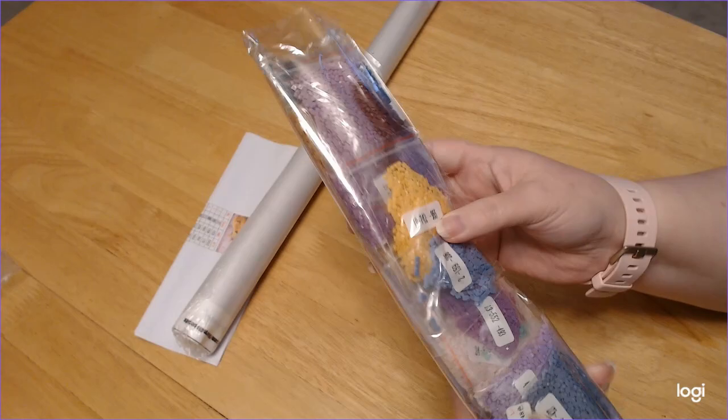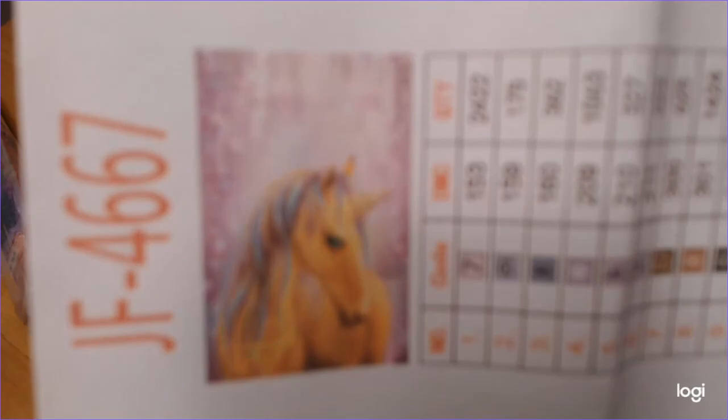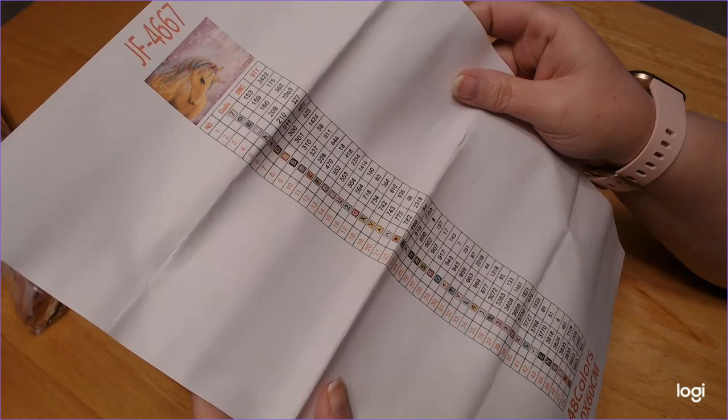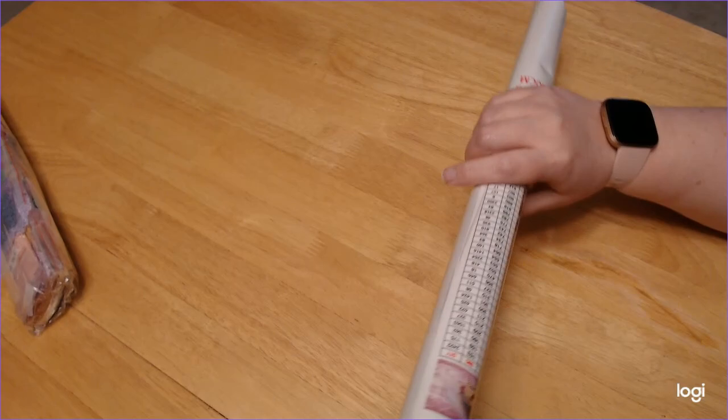We have our drills. We'll take a look at those here in a minute. We even have an inventory sheet. And that is the picture. Isn't that beautiful? So there are 48 colors. Wow. But yeah, isn't that pretty? I just fell in love with it.